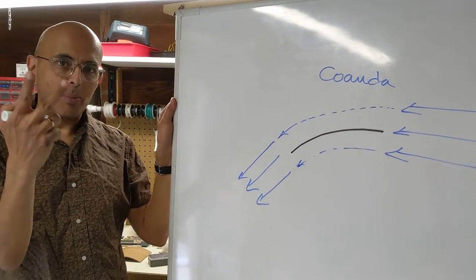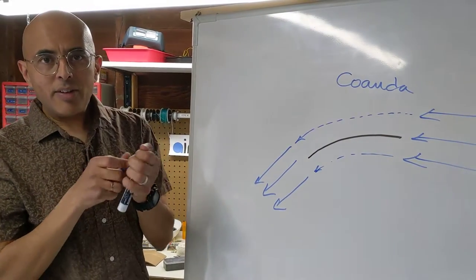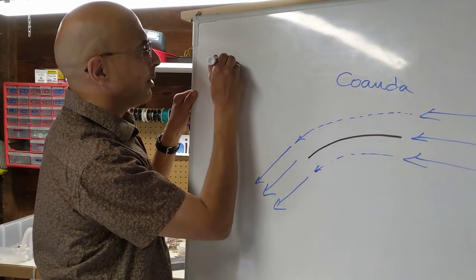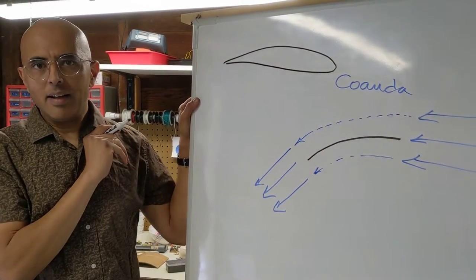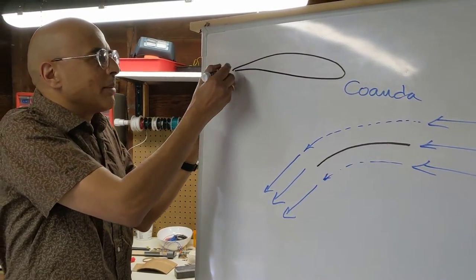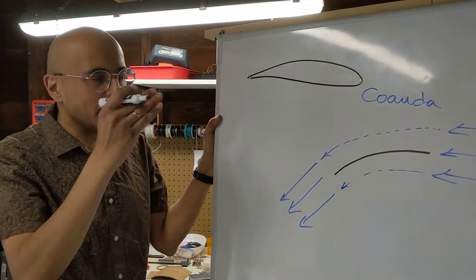Now there are two interesting points about it. First of all, you have probably been told that wings are designed in the shape of a so-called airfoil. And you've probably been told that an airfoil looks like this. And you might have been told that this is a magic shape. It turns out this is not a magic shape at all.